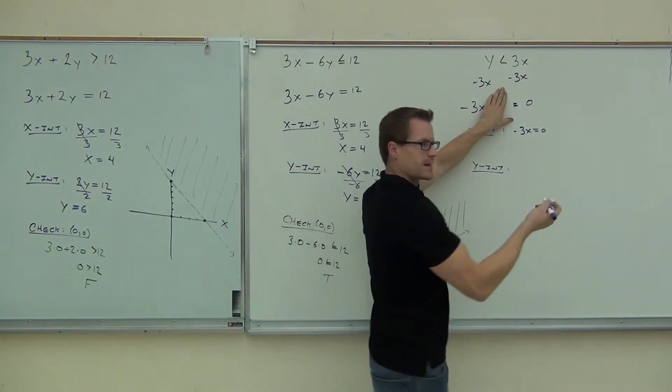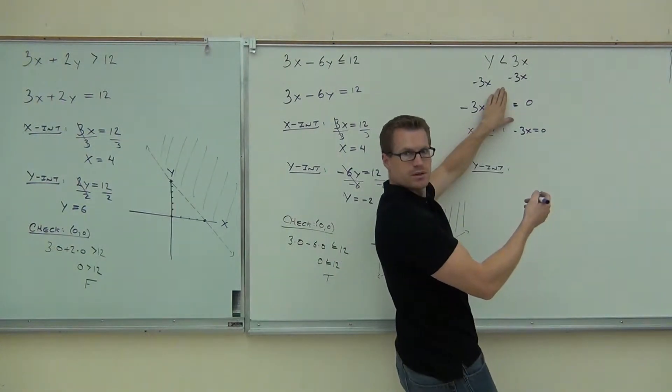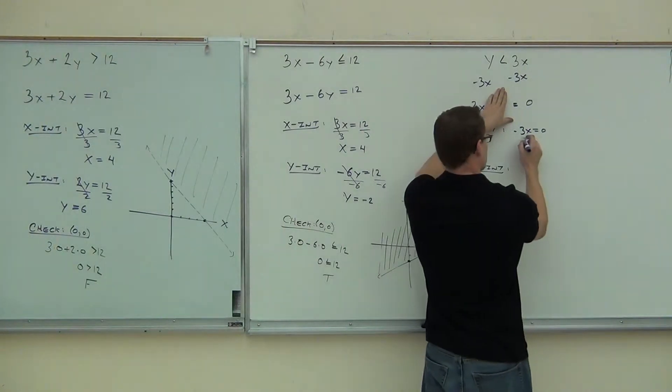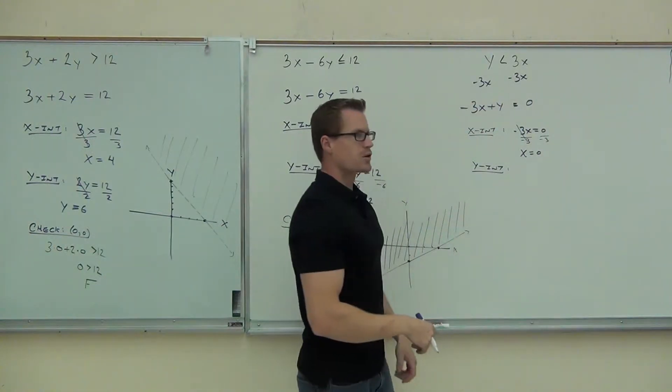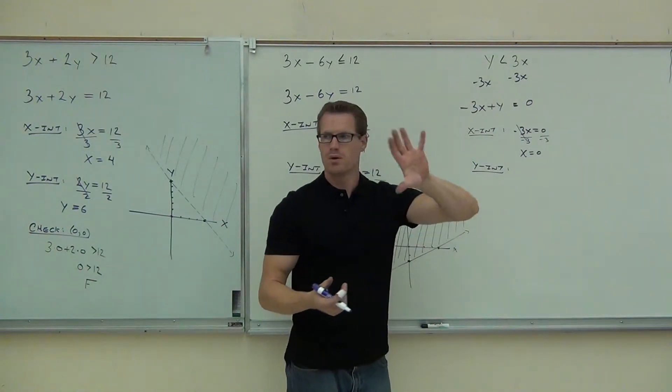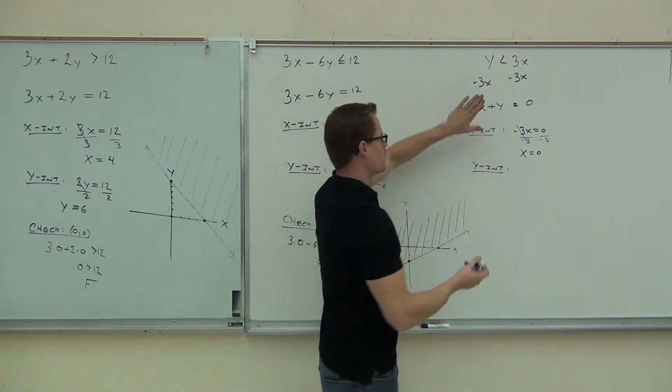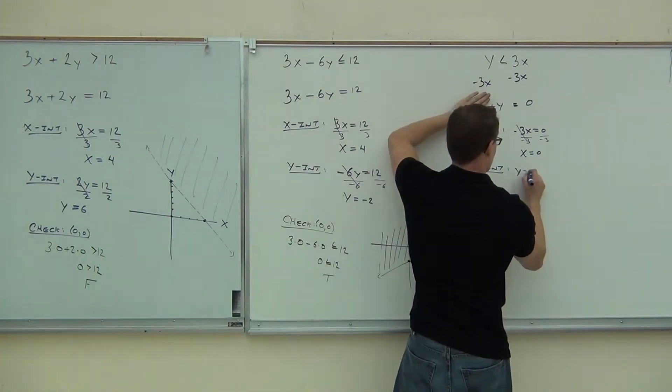And you would get x equals how much? Zero. Divide by negative 3. You get 0. But then in order to get the y-intercept, you would cover up the whole x-term, wouldn't you? And you would go, oh, okay. Y equals 0.